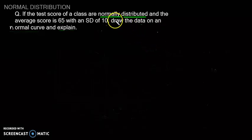Let us talk about normal distribution curves in this video lecture. The question given here is: if the test scores of a class are normally distributed and the average score is 65 with a standard deviation of 10, then draw the data on a normal curve and interpret it.